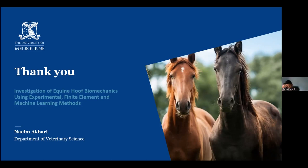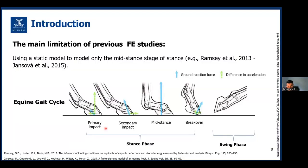Supervisor question: Could you go to slide eight? The blue arrow here is ground reaction force — what is the other one? It shows the difference in acceleration during one stance. I notice that the blue arrow, which is the ground reaction force, is not always vertical. It seems to have a shear component, like in the second impact phase of the stance. And on slide 33, where you showed your ground reaction force, you applied this force as a vertical force in the model. So you have the moment but not the shear.